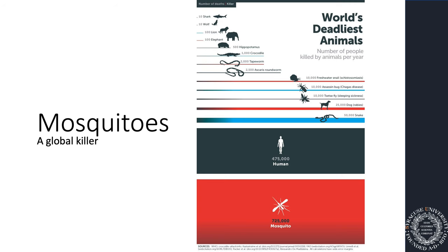The correct answer is the mosquito. The mosquito kills more humans than all other animals combined, including humans with wars and everything. Mosquitoes are the deadliest animals that exist on this planet.